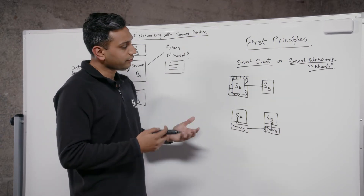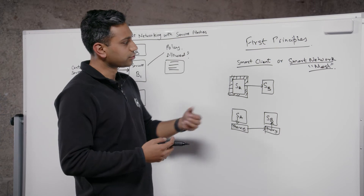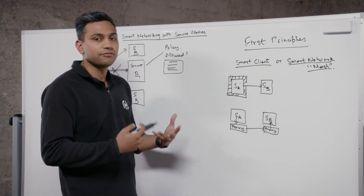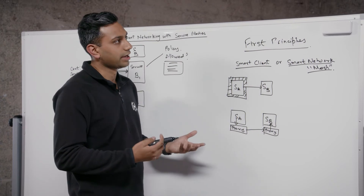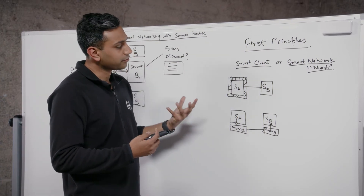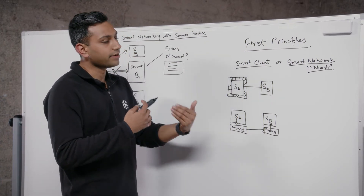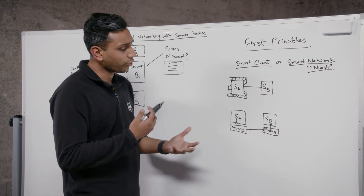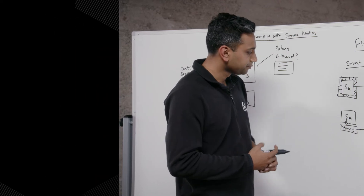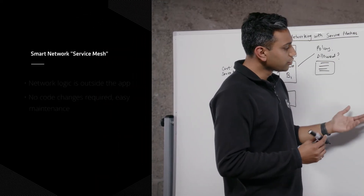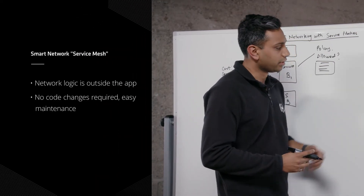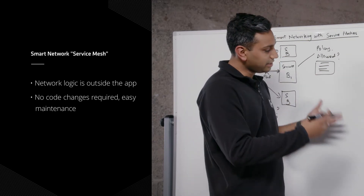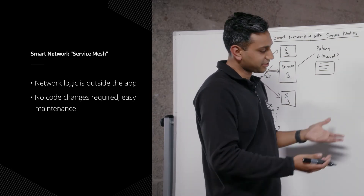Those are the kinds of concerns when it comes to the service mesh. The service mesh uses some form of telemetry and observability, which addresses those failures when it comes to seeing errors in production and debugging them. Those are the pros and cons of using a service mesh or smart network. Let's dive deeper into the service mesh architecture itself.